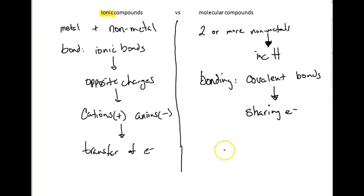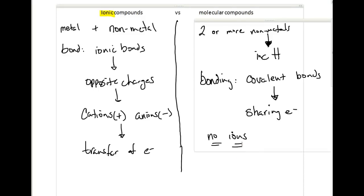Two or more non-metals. There are no ions involved here — we're not talking about positive and negative ions. We're just talking about a different type of bonding, and for the same reason: to get that electron configuration up to a noble gas.